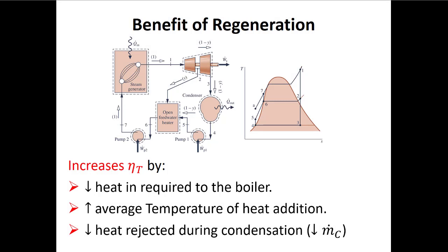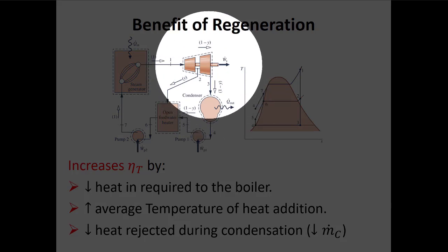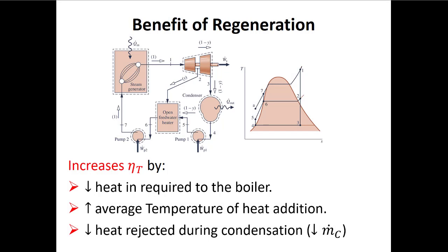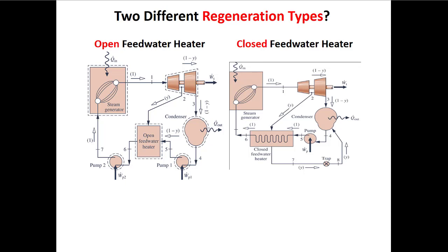It's also true that we're going to produce less power because we bleed off some mass — not all of the mass flow rate goes through our second stage turbine. But what happens is that the rate at which we're decreasing the heat in is bigger than the rate at which we're reducing the net power, so we have a net gain in efficiency. Because this strategy improves thermal efficiency, these kinds of thermodynamic cycles are Lorax approved.